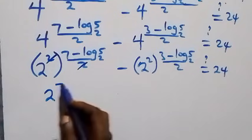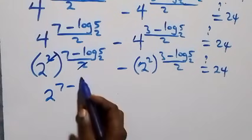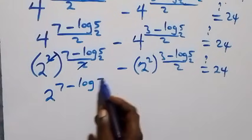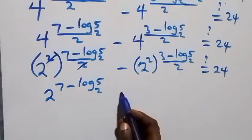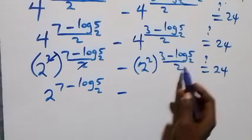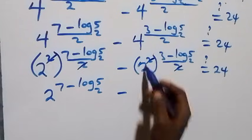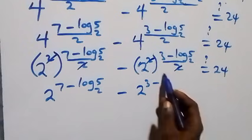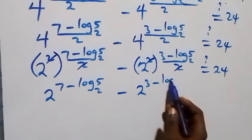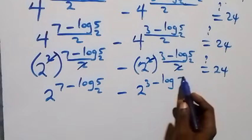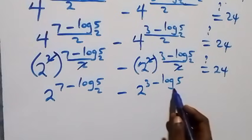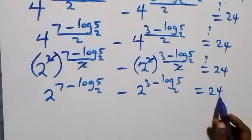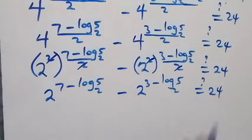We have 2 raised to power (7 minus log₅2), then minus 2 raised to power (3 minus log₅2), equals to 24 on this side.